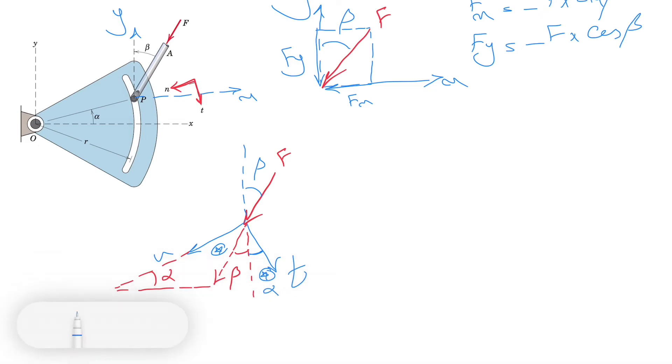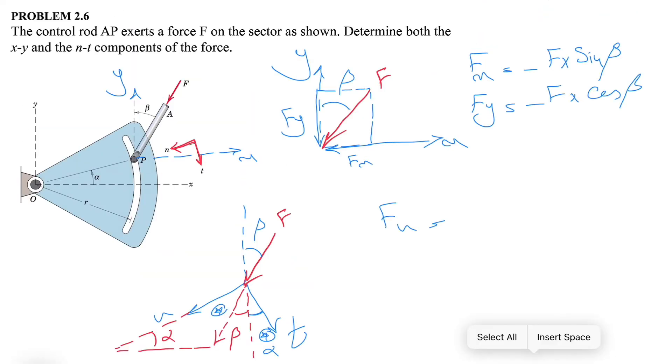Now it's easy to solve this since we have all the angles that we need. If we want to go with Fn, the component is positive because it will be at the positive direction of both n and t, and we want to show Fn and Ft.